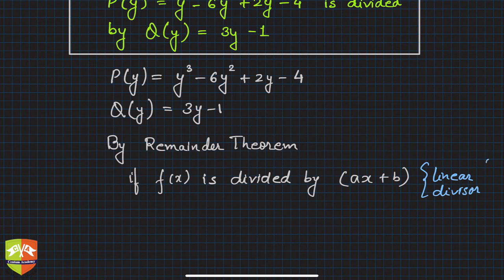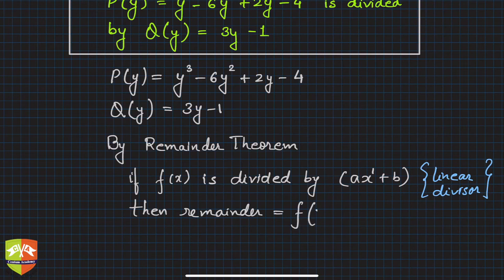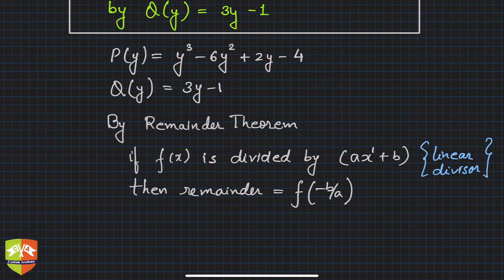by ax + b, a linear divisor (please understand this is only for linear divisors - linear means the power on the variable must be only one), then the remainder is equal to f(-b/a).